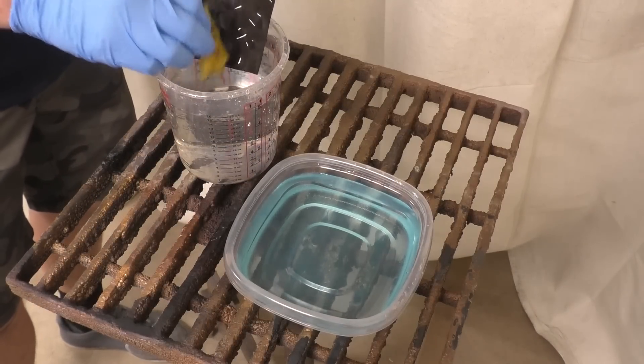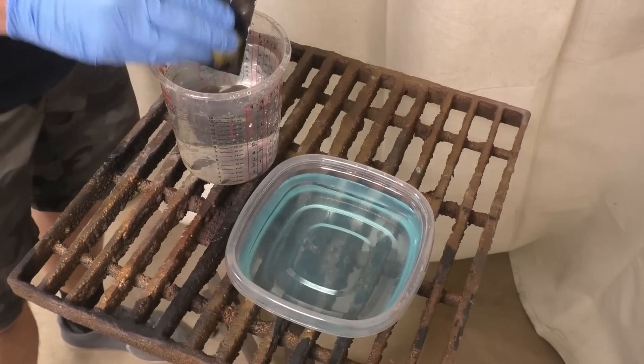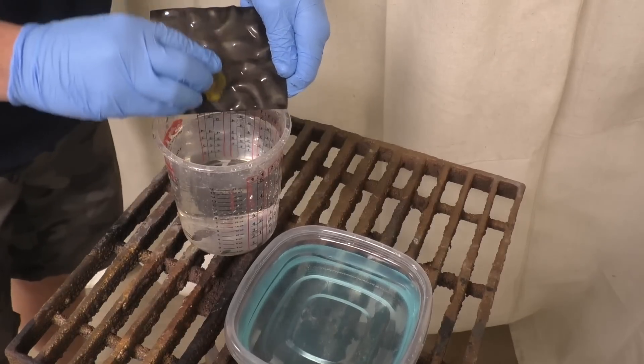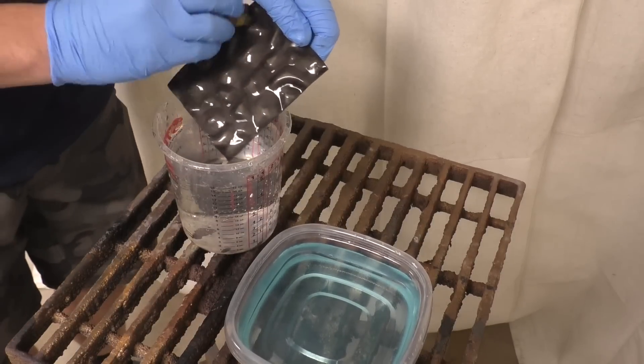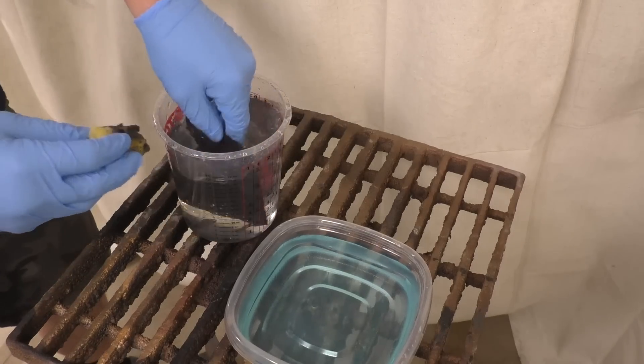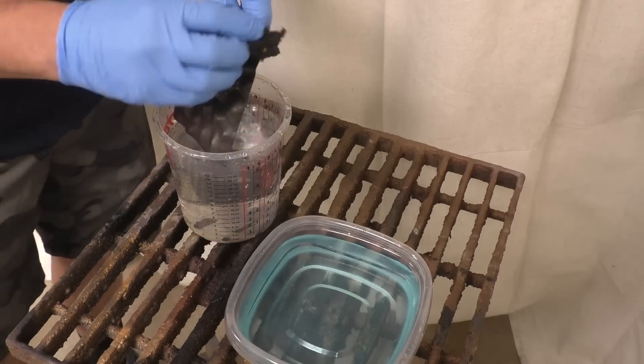We're just going to take the sponge and kind of wipe at it, and you can see that film coming off. Adjust the camera here so you can see a little bit better. You can see it's more of a gray rather than that brownish black that was there before.